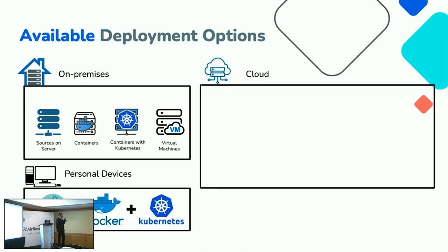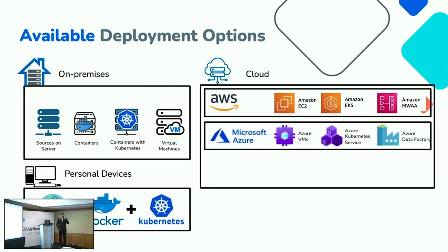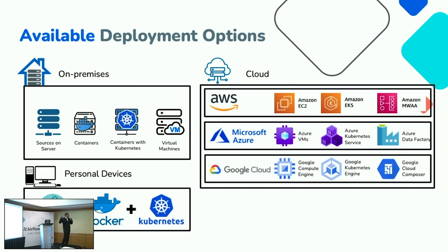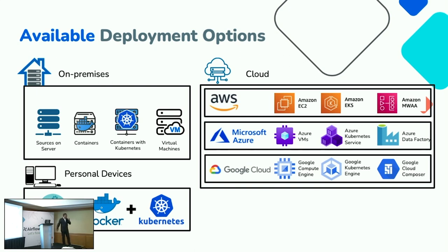If you're looking for cloud-based solutions, the three premier cloud providers — Azure, AWS, and Google Cloud Platform — give you three variants. First, you can deploy on virtual machines. Second, you can deploy on top of a managed Kubernetes service. Third, if neither of those fits, you can look at a fully managed service offering for Apache Airflow that all of these cloud providers offer.